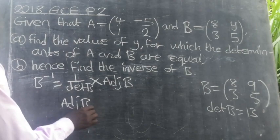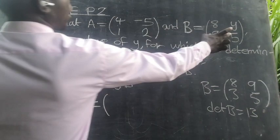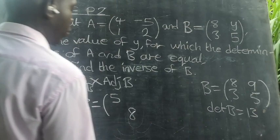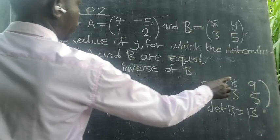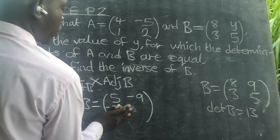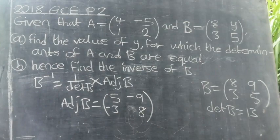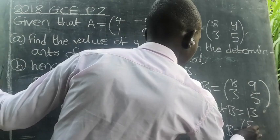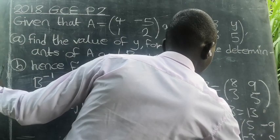So let's find the adjoint of matrix B. For the adjoint, we swap the major diagonal elements: 8 and 5 become 5 and 8. For the minor diagonal elements, we multiply by negative, so positive 3 becomes negative 3, and positive 9 becomes negative 9. So the adjoint of matrix B equals [5, -3; -9, 8].